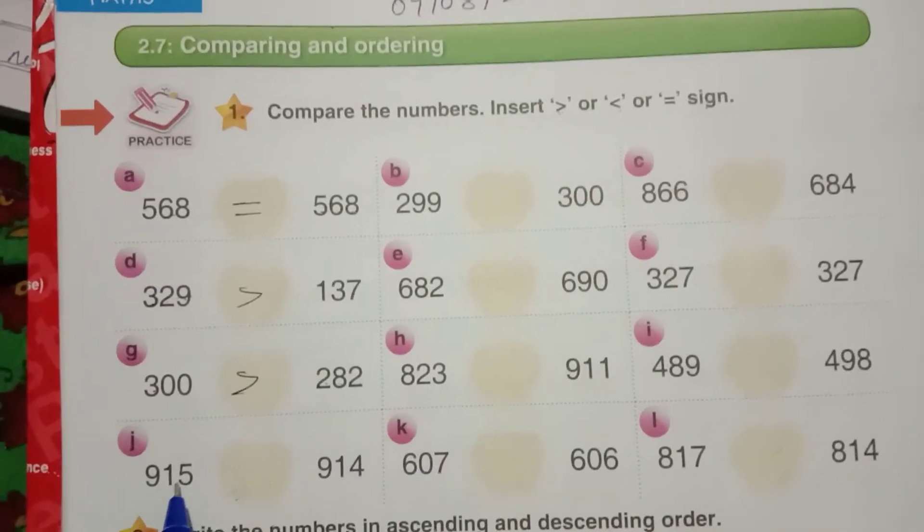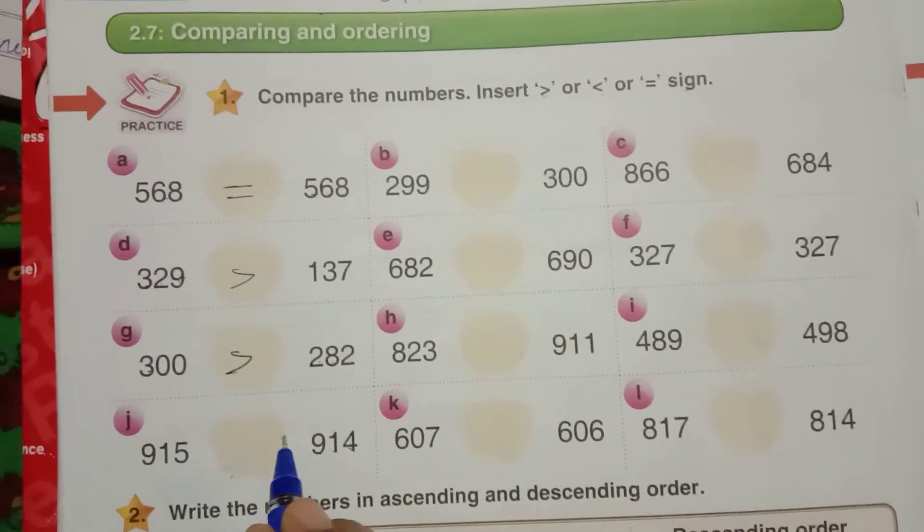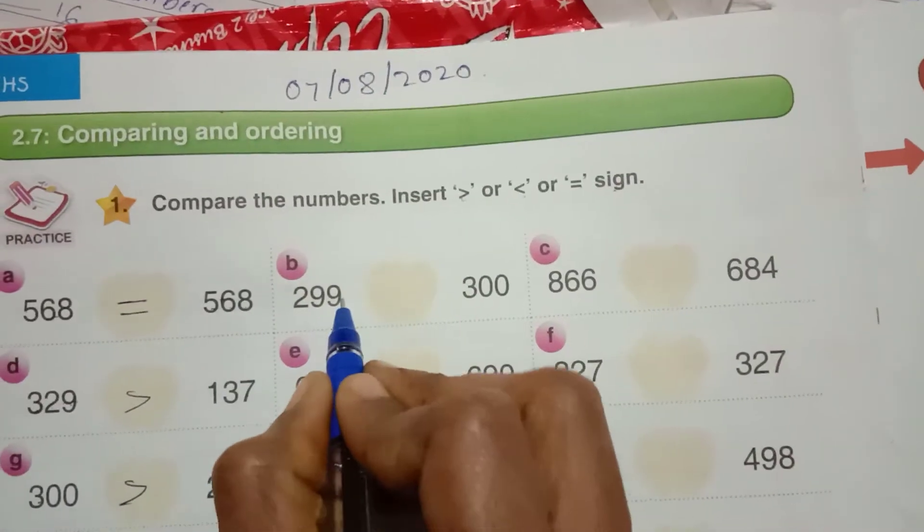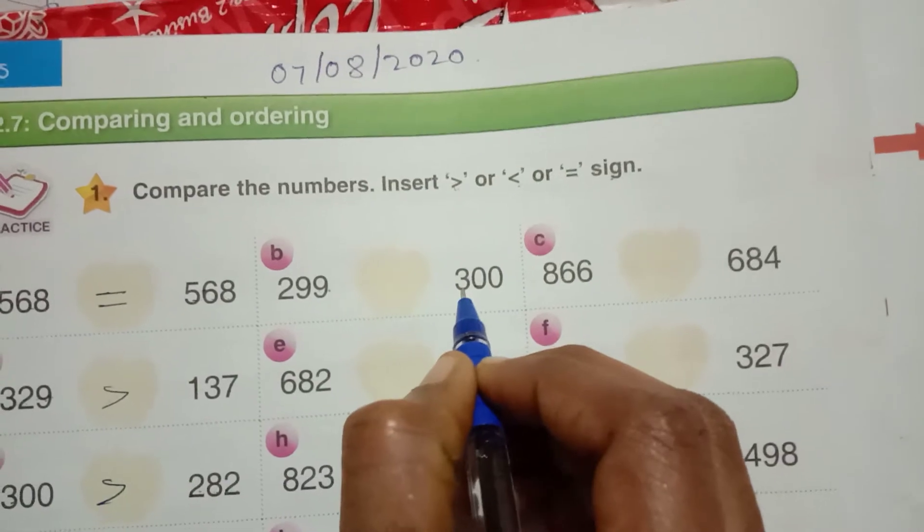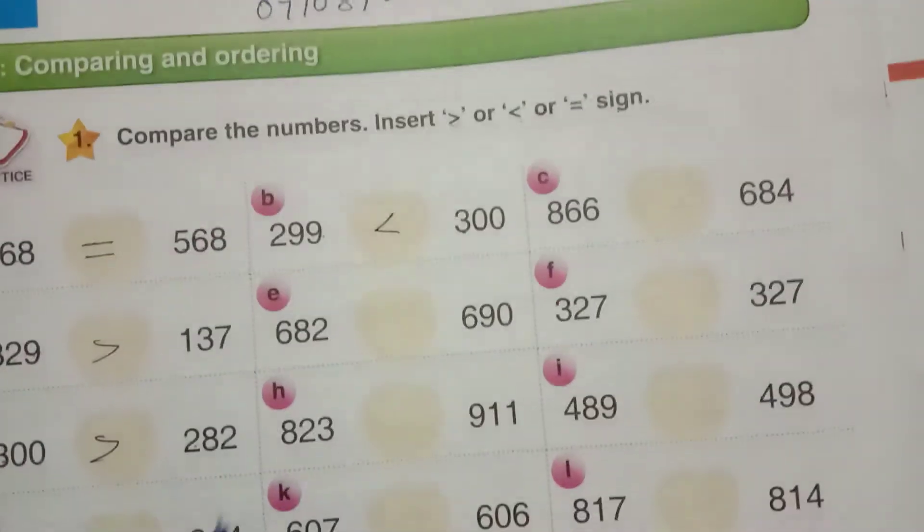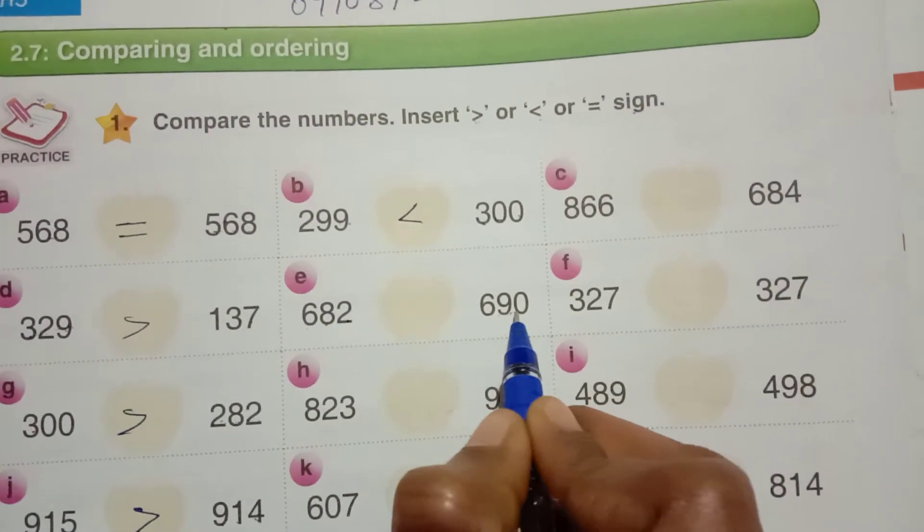Here 915 is there. Here 914 is there. 915 is greater than 914. 299 here, 300. 2 is less than 3, it means 299 is less than 300.